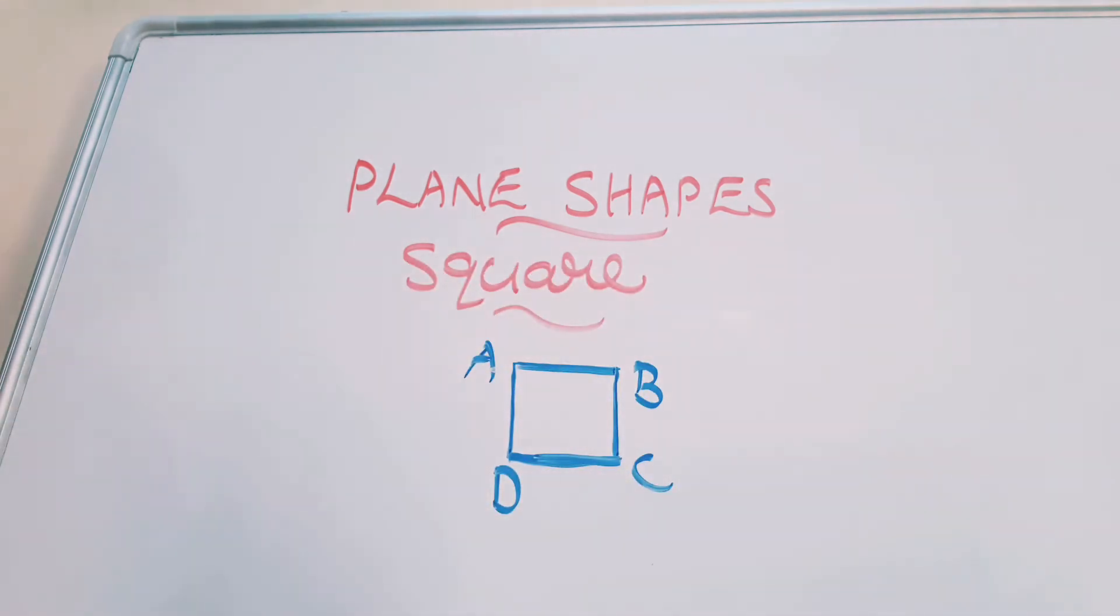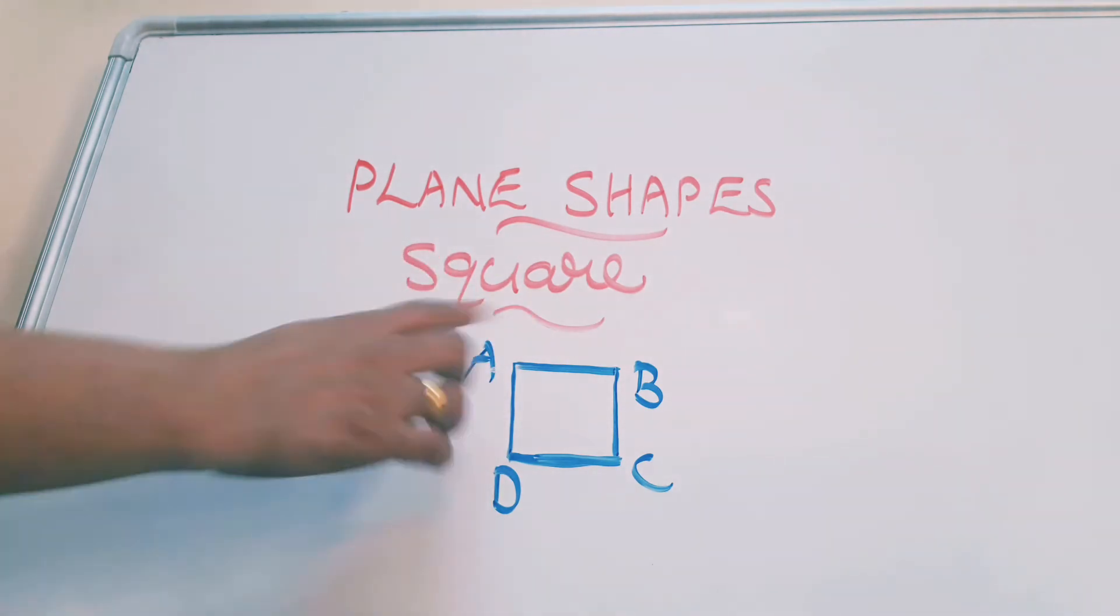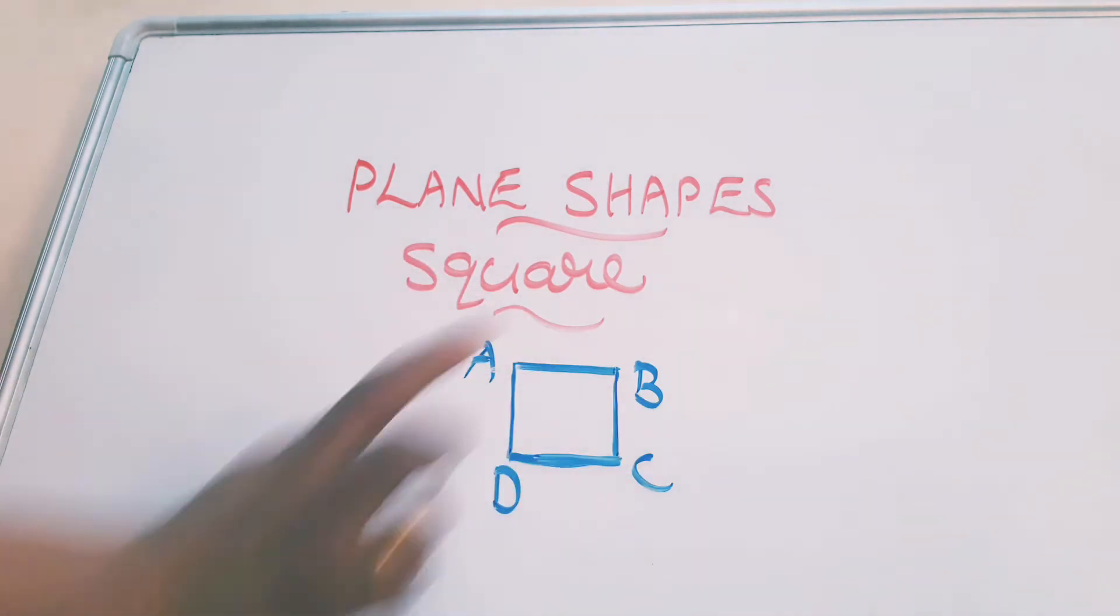BC or CB also okay. CD and DC. Then AD and DA. I mean OR, not AND. OR. AB or BA. BC or CB. CD or DC. AD or DA. I will write and show.